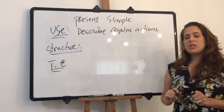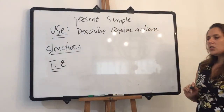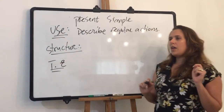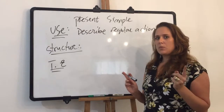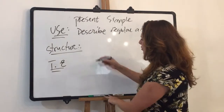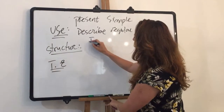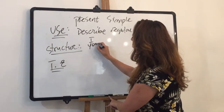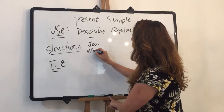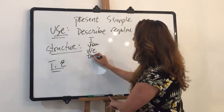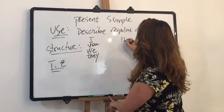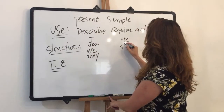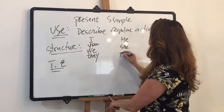We need to understand that we have to divide our pronouns. We have two groups. We have I, you, we, and they. And then we have he, she, and it.